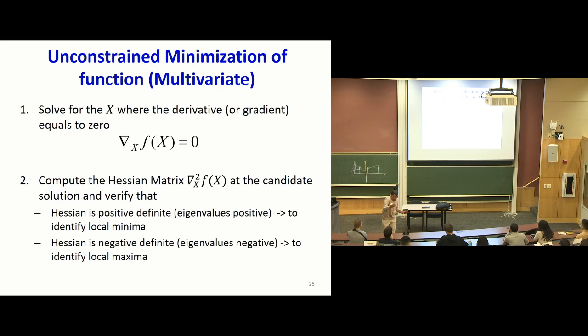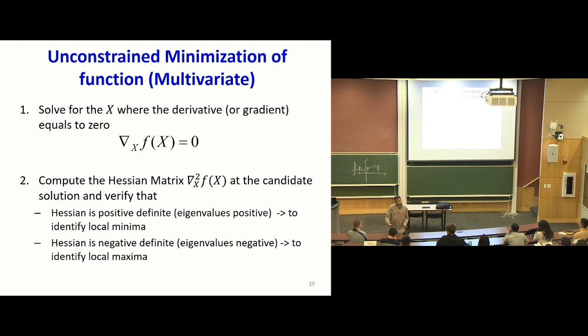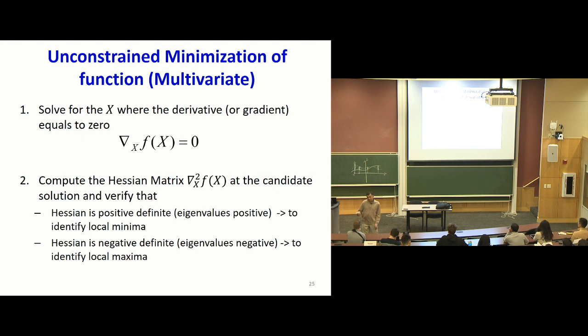In multiple dimensions, you can find very strange behaviors — the function could be a minimum in one direction and a maximum in the other. What would that look like? Like a horse saddle. In that case, you can find a location where the derivative is zero, but one eigenvalue of the Hessian is negative and the other is positive. So if you want something that's a pure minimum, every single eigenvalue of the Hessian has to be positive — you make sure the Hessian is positive definite. A matrix is positive definite if every eigenvalue is positive; positive semi-definite if every eigenvalue is non-negative.